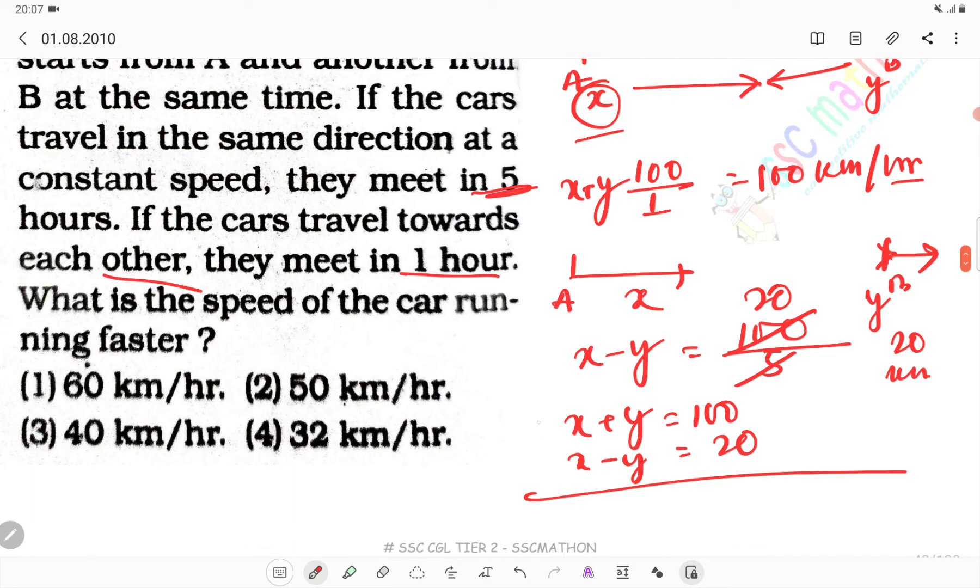X plus Y plus X minus Y gives 2X equals 120, so X equals 60 km per hour.